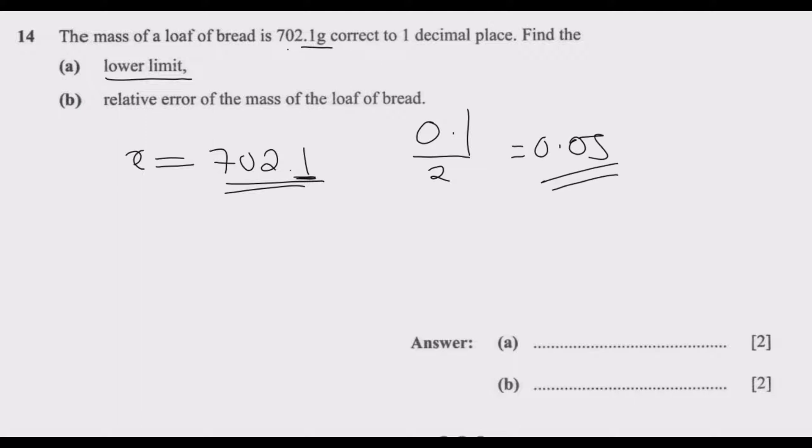So we subtract 0.05 from this number, we are going to get 702.05. If I have this number and I correct it to one decimal place, because this number 5 is equal to 5 or greater than 5.